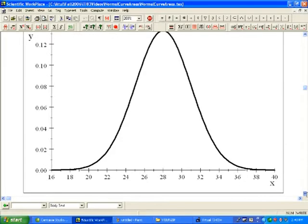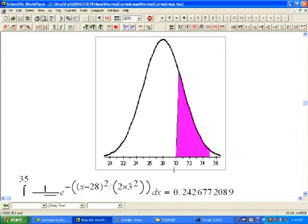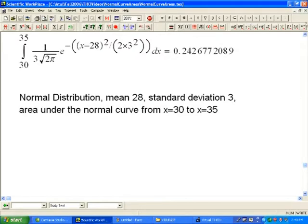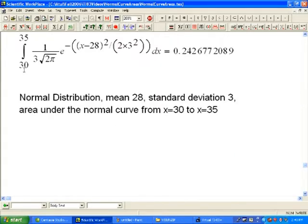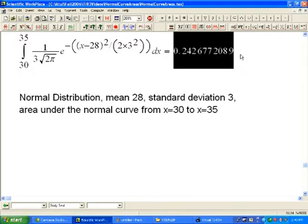What we need is this area under the normal curve from x equals 30 to x equals 35. Just a little commercial for calculus - the way it's computed is you integrate from 30 to 35 the density function, and the answer is this.